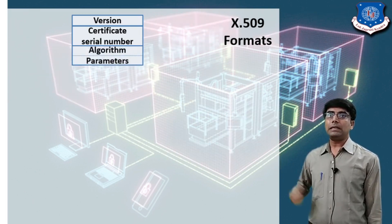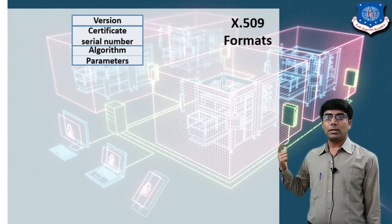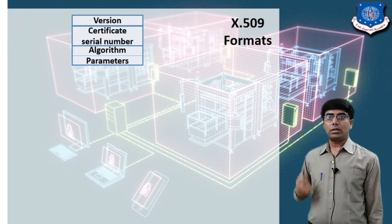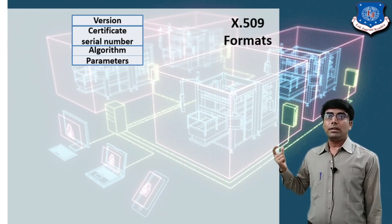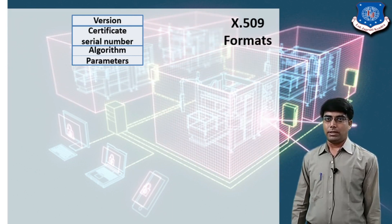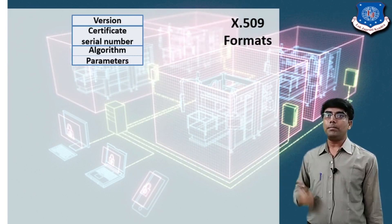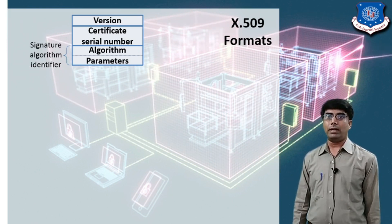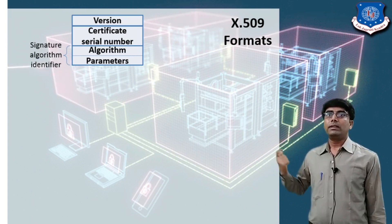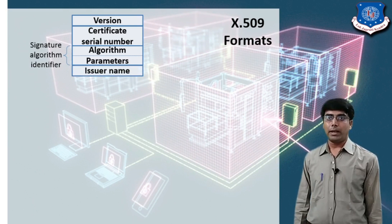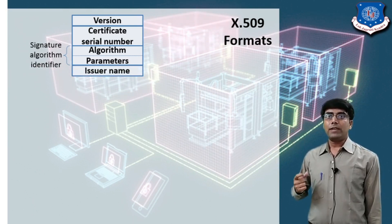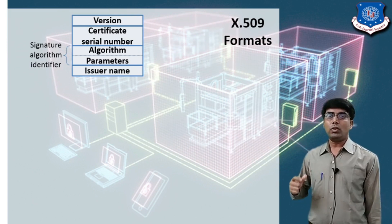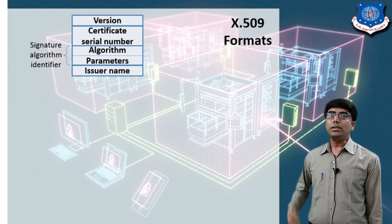The next field is the certificate serial number. The certificate authority assigns a unique serial number to each certificate. Next is the algorithm identifier, which consists of the algorithm and its parameters — together called the signature algorithm identifier — used to generate the signature. Next is the issuer name, which is the name of the certificate authority that generates the certificate.